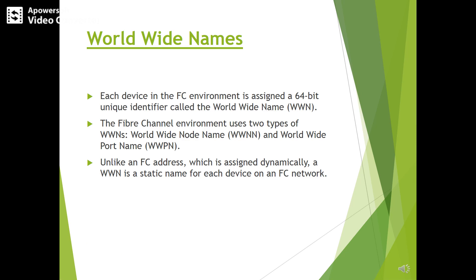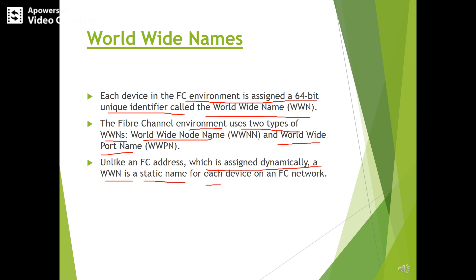Next is worldwide names. Each device in the FC environment is assigned a 64-bit unique identifier called a worldwide name. The fiber channel environment uses two types of worldwide names: worldwide node name and worldwide port name. Unlike an FC address, which is assigned dynamically, a worldwide name is a static name for each device on an FC network.